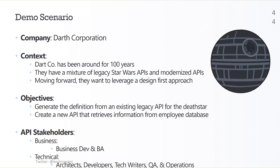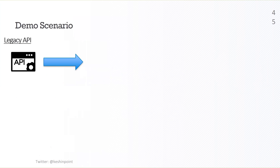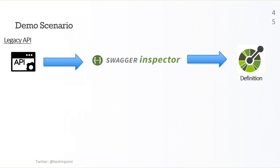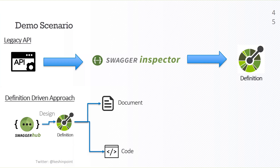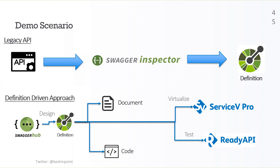We have two specific objectives, both tied to the definition. Objective one: take a legacy API and use Swagger Inspector to generate its definition. Objective two: for new APIs moving forward — specifically the HR API — use SwaggerHub to design the definition, document the API, generate the code, and push the API definition into testing and virtualization platforms.